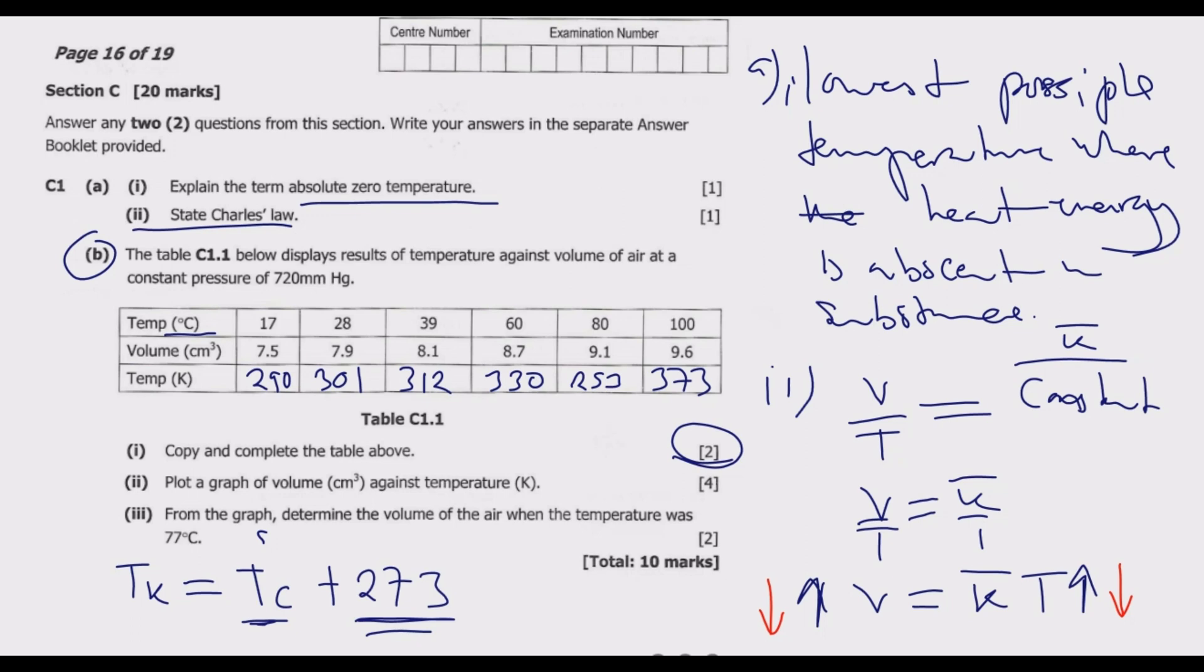Just to take note that this absolute zero temperature in degrees is the same as negative 273 degrees. This is in degrees. Then in Fahrenheit, it's about negative 459.8 Fahrenheit degrees, or approximately negative 460.